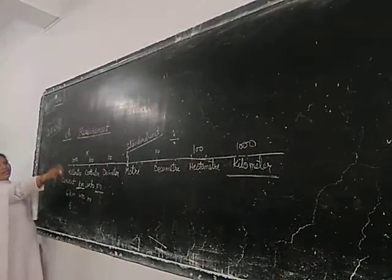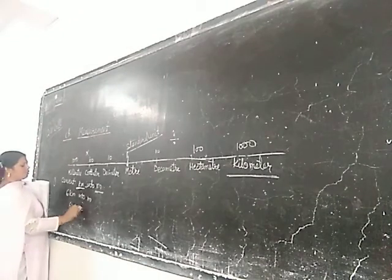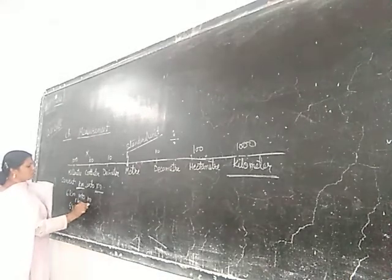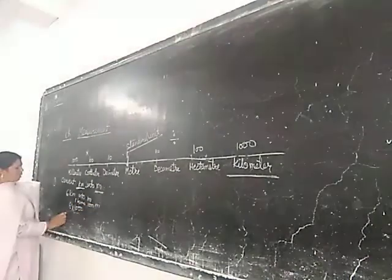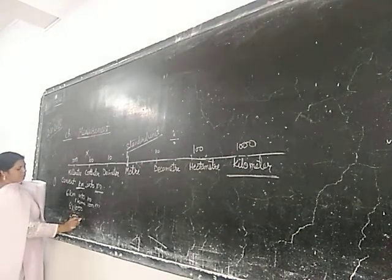Okay? Because 10, 10, 10 means 1000. 6 multiplied by 1000 because 1 kilometer is equal to 1000 meter. So, we have to multiply by 1000, 6000 meter.